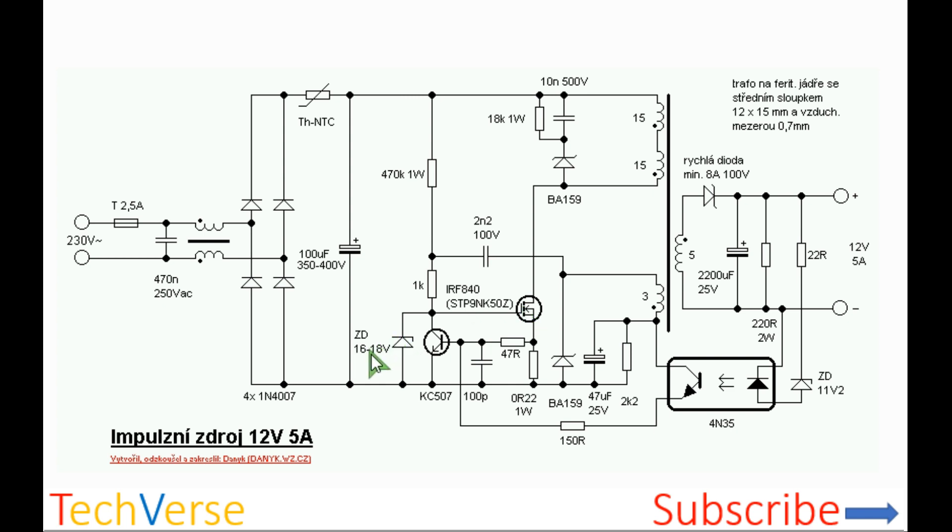There is also a zener diode at the input, which should be in the range of 12 to 15 volts. What this does is that it protects the gate of the MOSFET from overvoltage, since more than 20 volts across the gate and source of the MOSFET can cause the MOSFET to blow up.